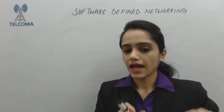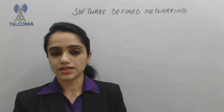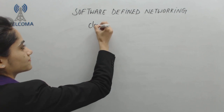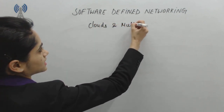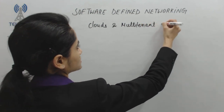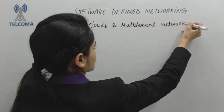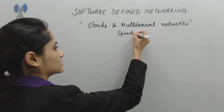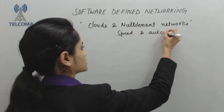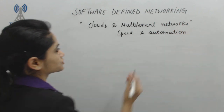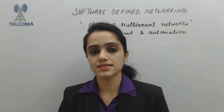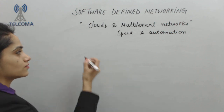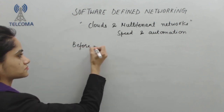We require speed and automation because we are going to work with cloud and multi-tenant networks. Our networking should be fast enough to access the cloud and different networks. Now let's compare what we had before SDN.